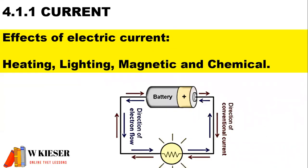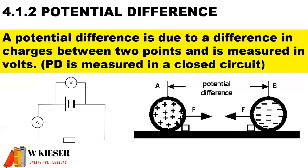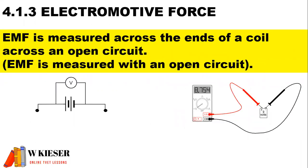In terms of the effects that electric current has on a circuit, it has heating, lighting, magnetic and chemical effects on our electric circuits. To define potential difference: a potential difference is due to a difference in charges between two points and is measured in volts. You'll notice here with our voltmeter, it's connected in parallel across the load and is measured in a closed circuit. To define electromotive force: EMF is measured across the ends of a coil across an open circuit, so our voltmeter is connected in parallel across the battery with an open circuit.